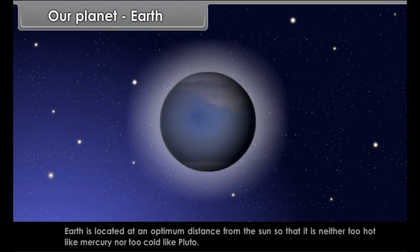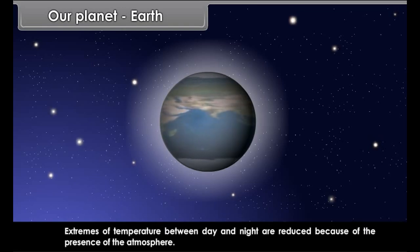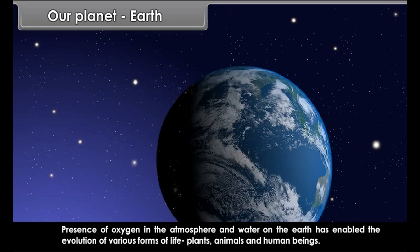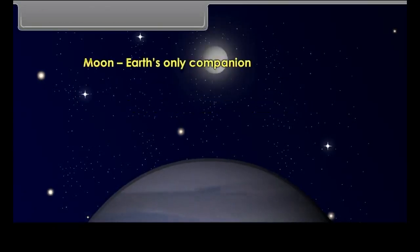Our planet Earth is located at an optimum distance from the sun, so that it is neither too hot like Mercury nor too cold like Pluto. Extremes of temperature between day and night are reduced because of the presence of the atmosphere. There is abundance of water in solid, liquid and vapor state. The presence of oxygen in the atmosphere and water on the Earth has enabled the evolution of various forms of life — plants, animals and human beings. Owing to the abundance of water, the planet appears blue from space, and hence Earth got the name Blue Planet.